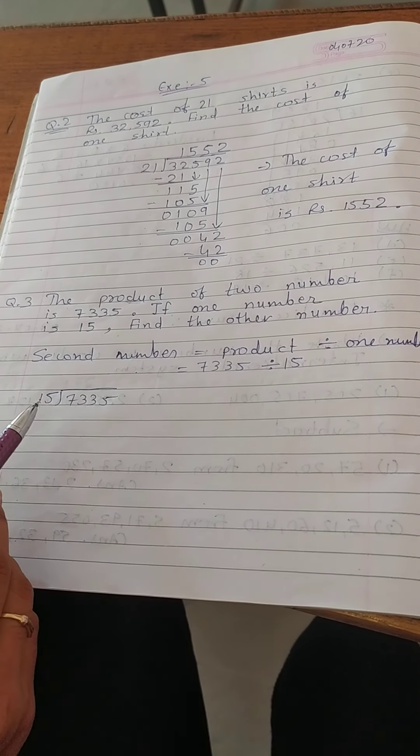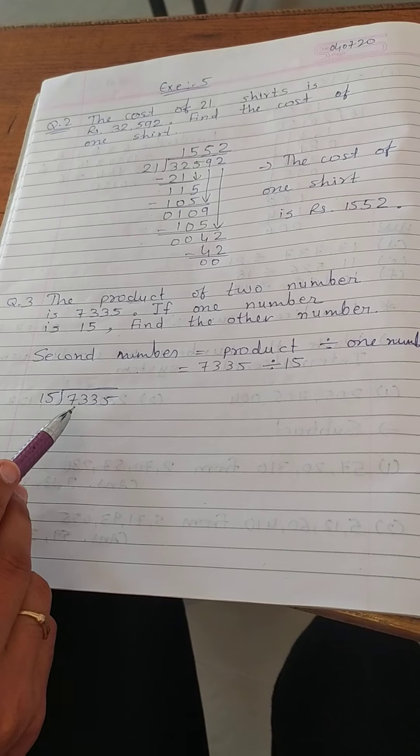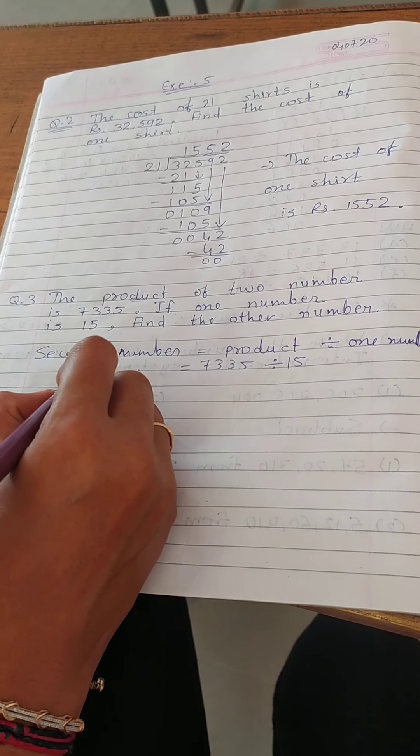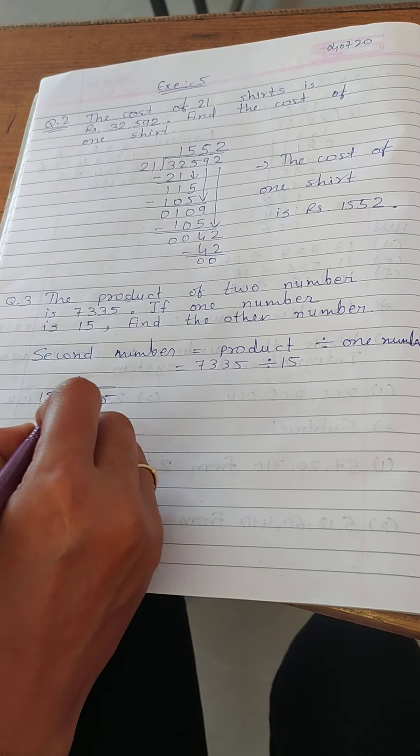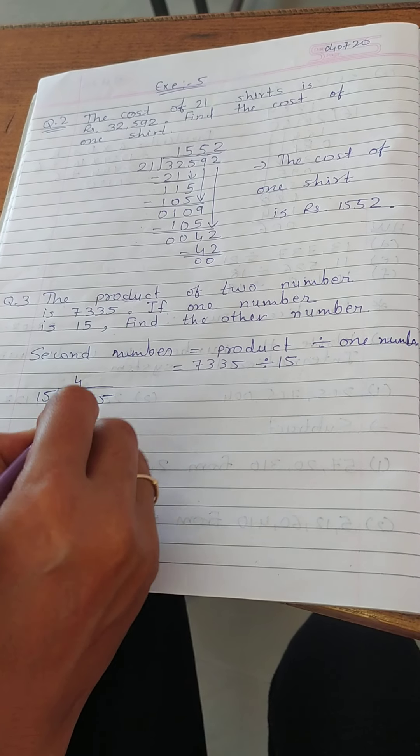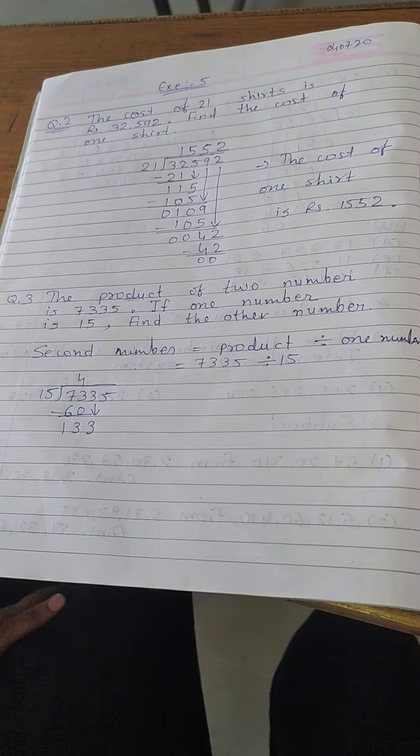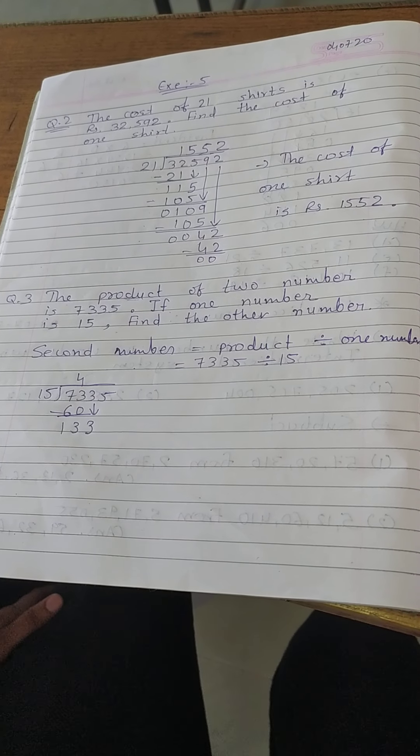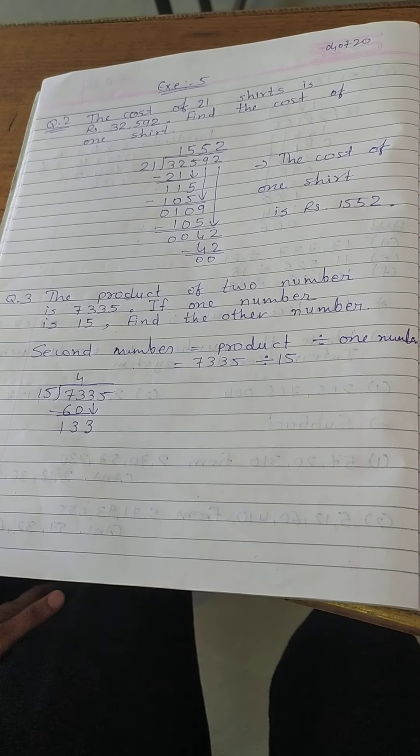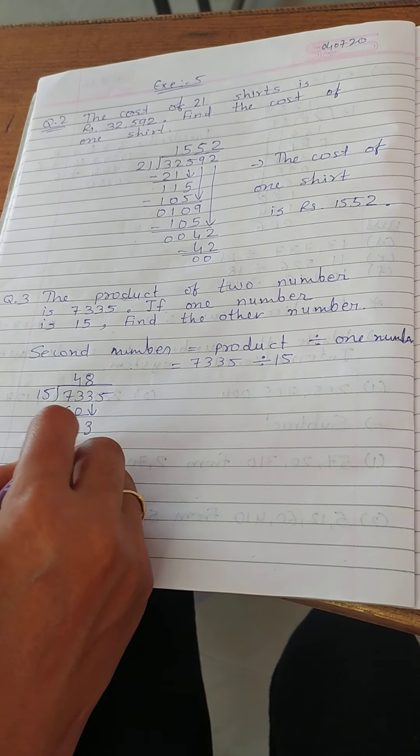7335 divided by 15. Now, 15 times 5 equals 75. It will be bigger here. So we will take 15 times 4 equals 60. Now drag the number 3. Here we get 133. Now, 15 times 8 equals 120 and 15 times 9 equals 135. So we will take 15 times 8 equals 120.